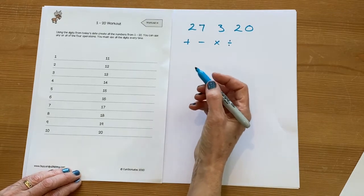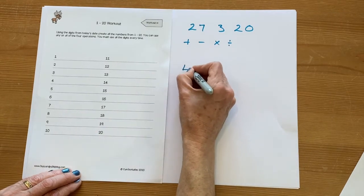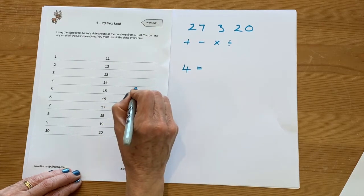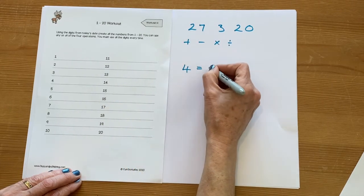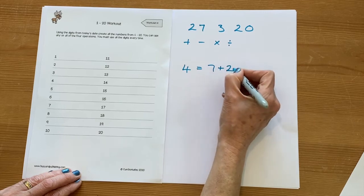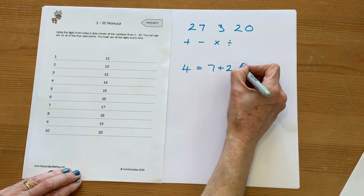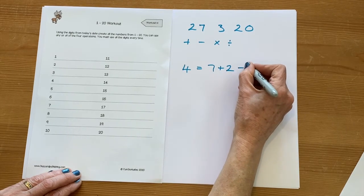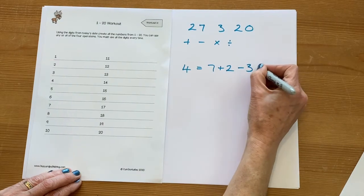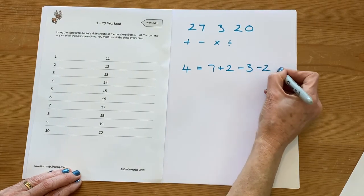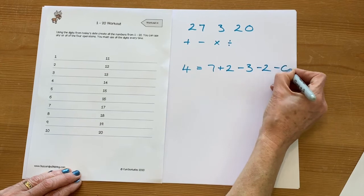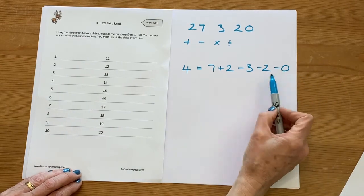So for example, let's say we're going to make four. We can make the number four by thinking about seven add two, which is nine. If we took away three, that would give us six. Take away another two will be four, and then obviously with zero, adding and subtracting makes no difference at all, so we can just pop it on the end like that.